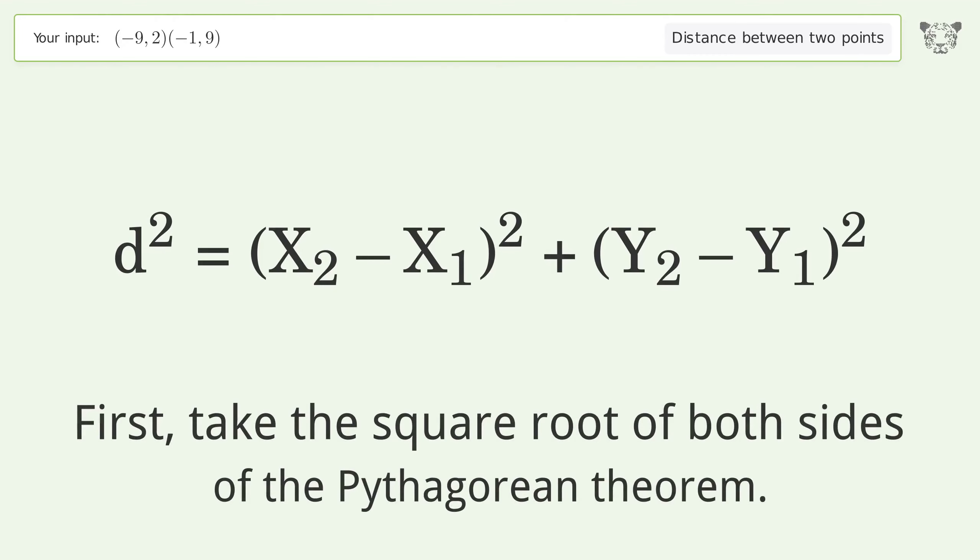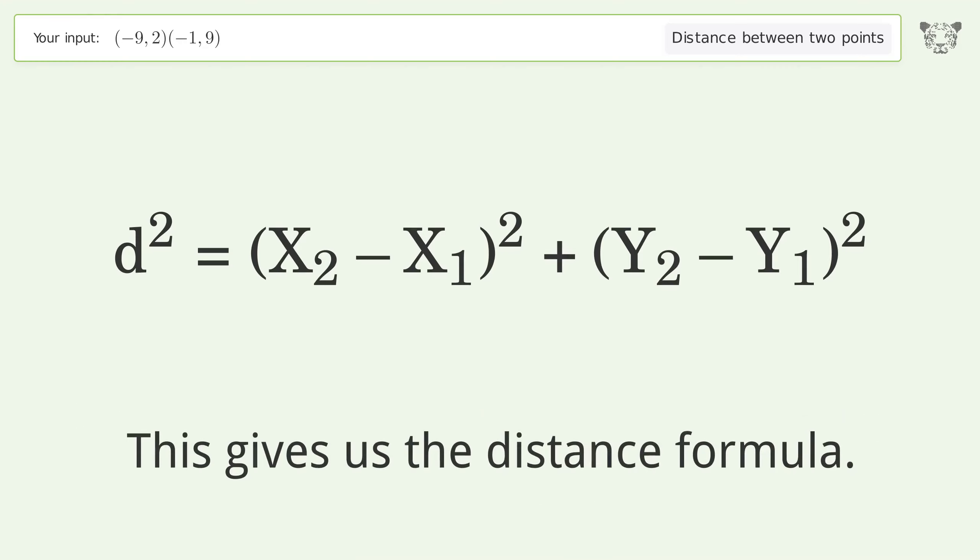First, take the square root of both sides of the Pythagorean theorem. This gives us the distance formula.